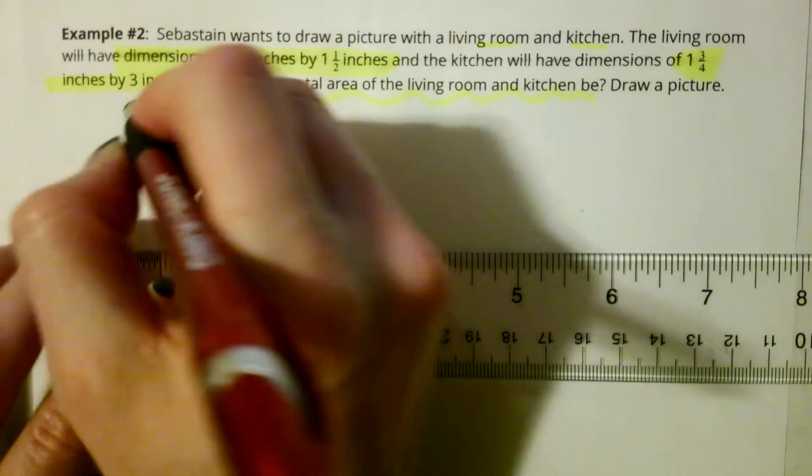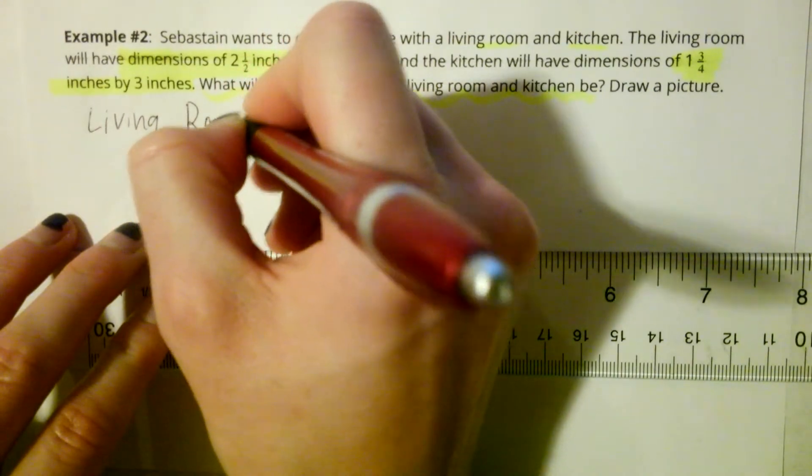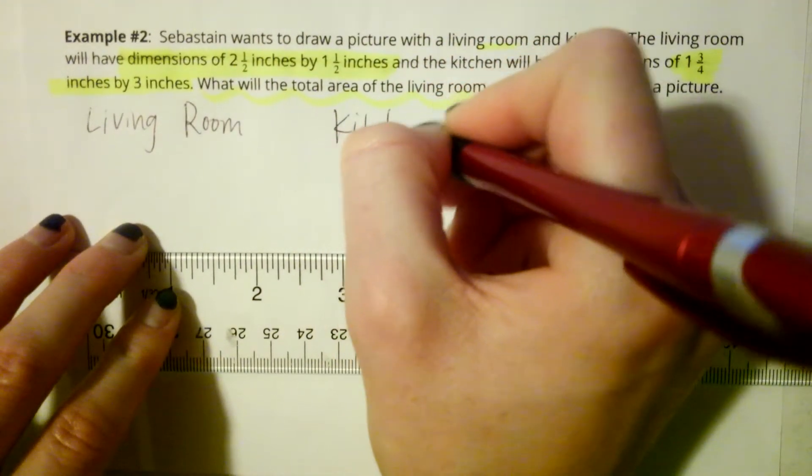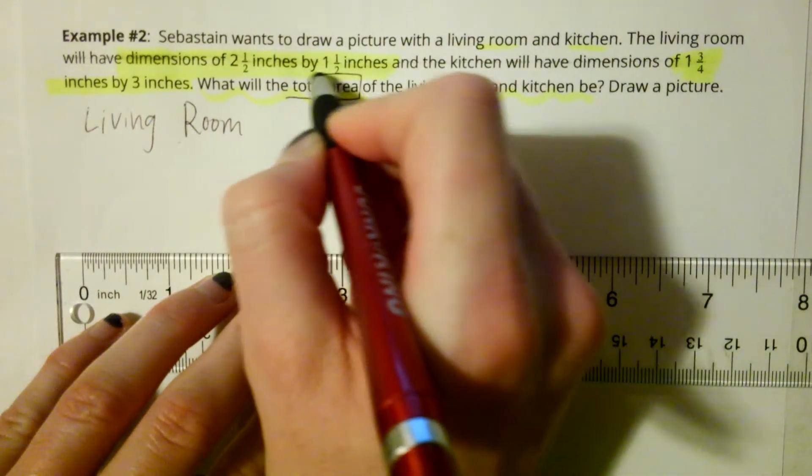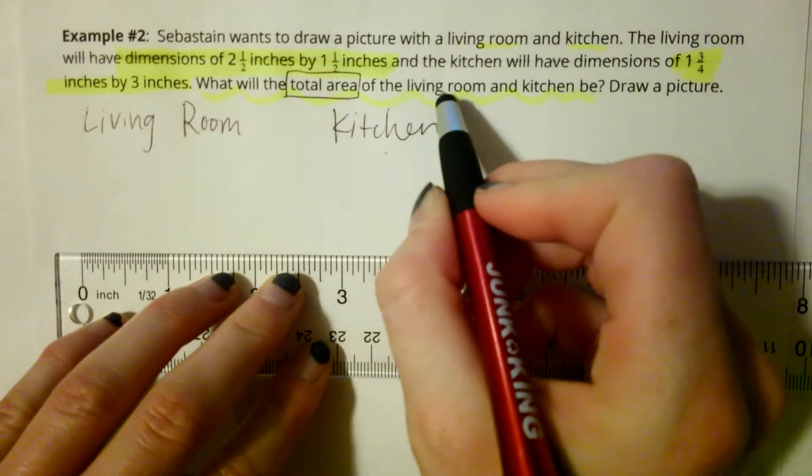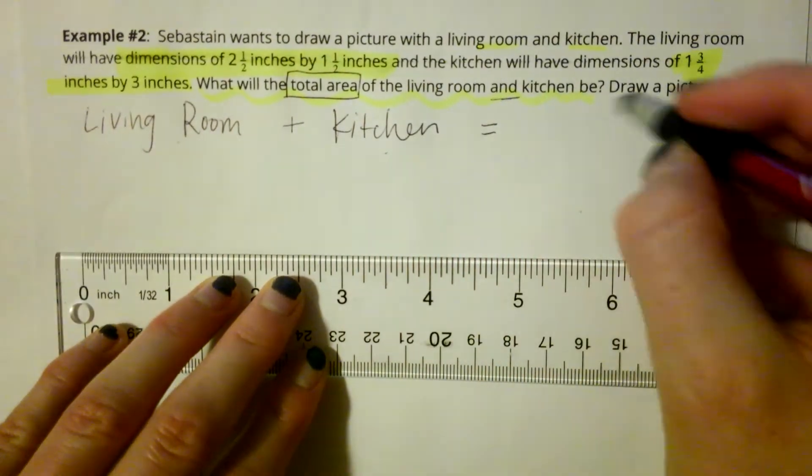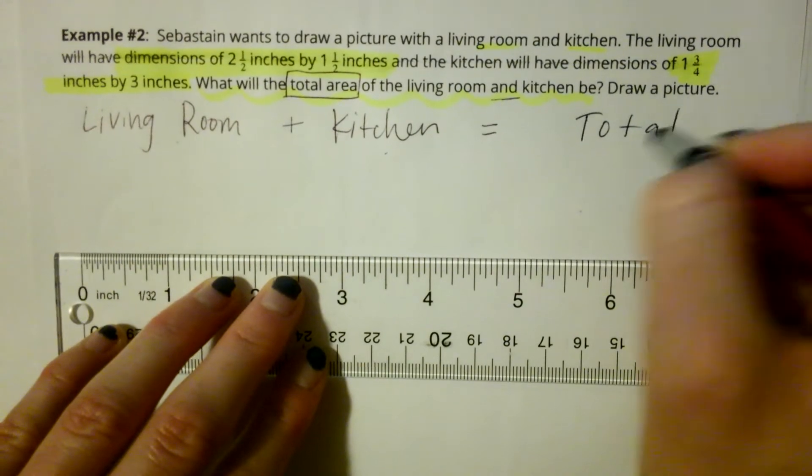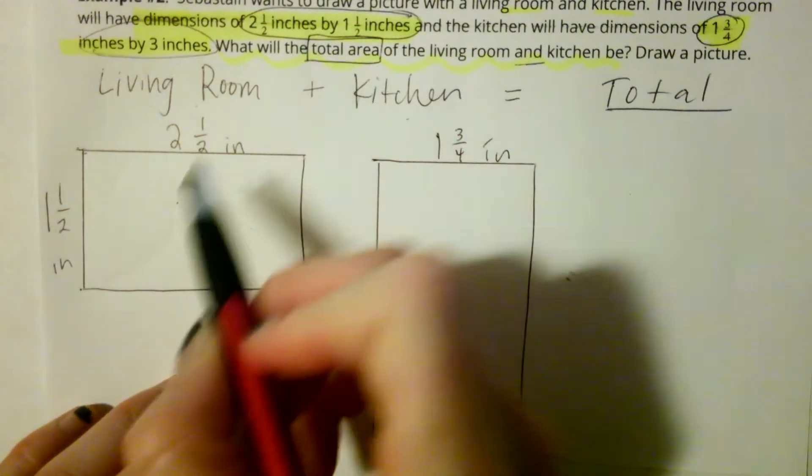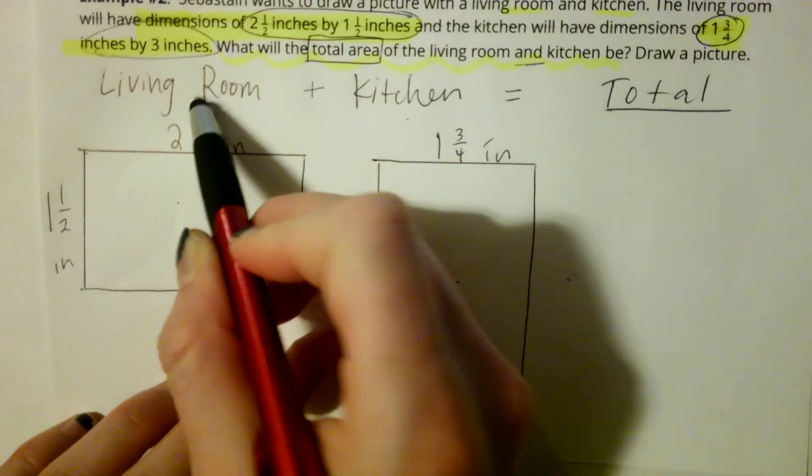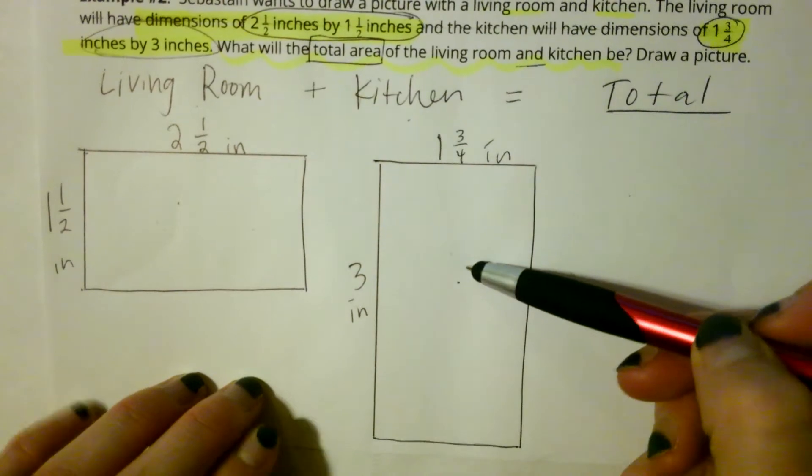It says draw a picture. I'm going to start out by labeling, well I know where I'm going to have a living room, and I know I'm going to have a kitchen. Once I figure out the area of those two, I need to solve for the total area, just like we did last week, of the living room plus and the kitchen. So then I'll be able to find my total area. I took the dimensions and drew the rectangle with my ruler for the living room, and I took the dimensions for the kitchen, and I drew the rectangle here.